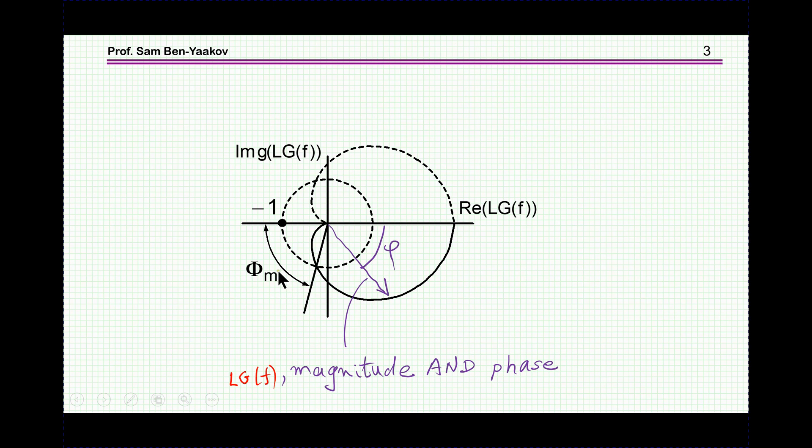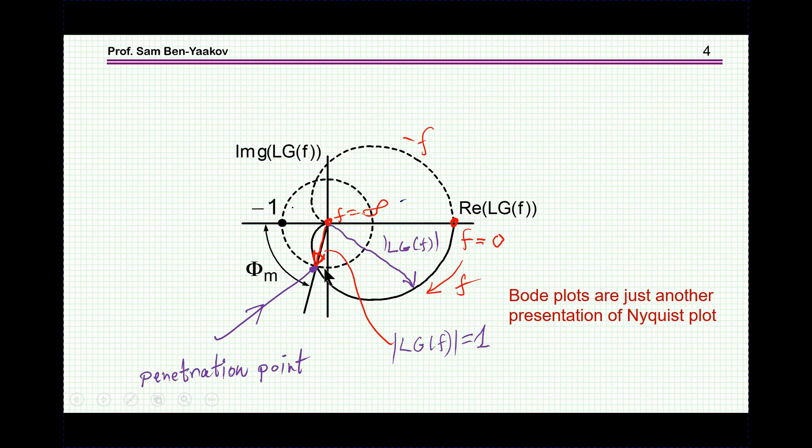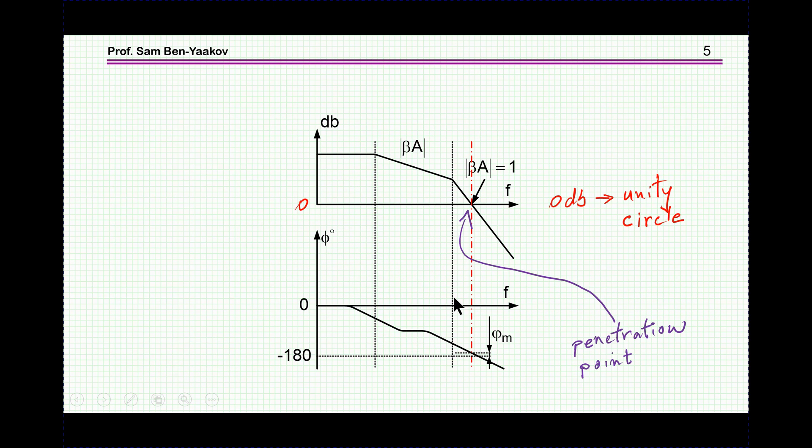We define this angle as the phase margin, which we'd like to keep more than, say, 30, 40 degrees, otherwise the system will be sort of jumpy, oscillatory, and we'd like to avoid it. So this plot, as I've said, it starts from zero, goes to infinity, minus infinity, and this penetration point is really important, because it explains the transfer of this curve to the Bode plot. Bode plots are actually another representation of this same information that is given here, just in another way of doing it, and here it is.